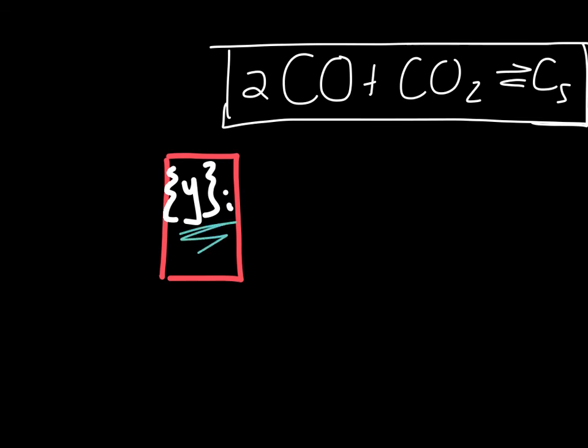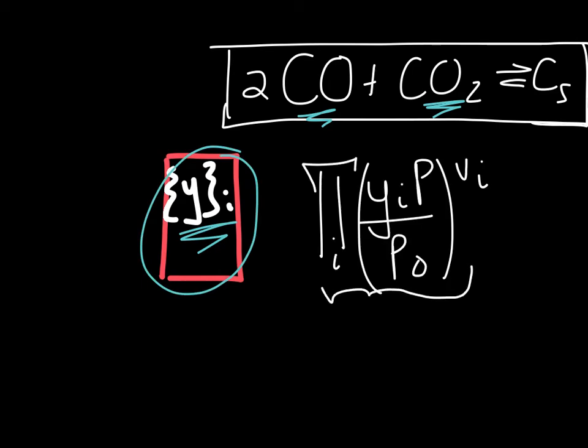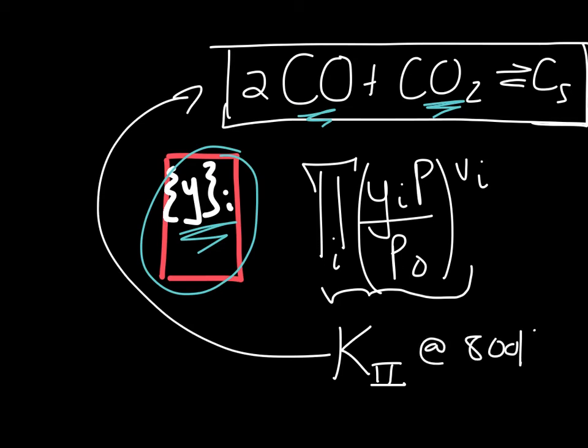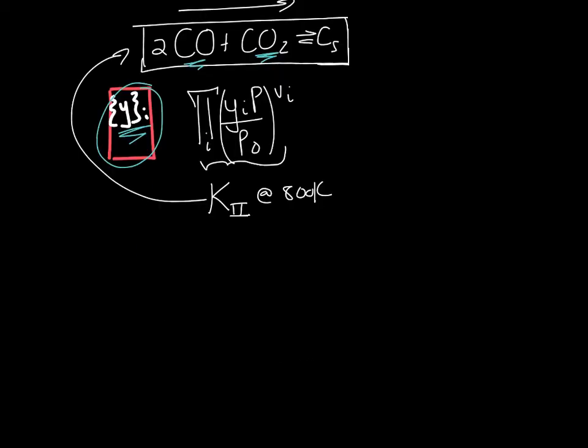Once you know the mole fractions of the gas phase components at equilibrium in your equilibrium reactor you can calculate this actual composition based term and compare it to the equilibrium constant of the carbon deposition reaction at 800 Kelvin to see whether it will actually take place in the forward direction. If your answer is that this reaction will not take place, ask yourself over what pressure range will carbon deposition occur at the equilibrium mixture composition in your reactor.